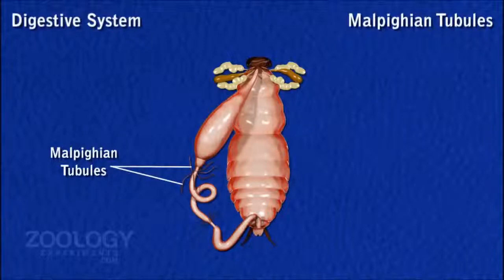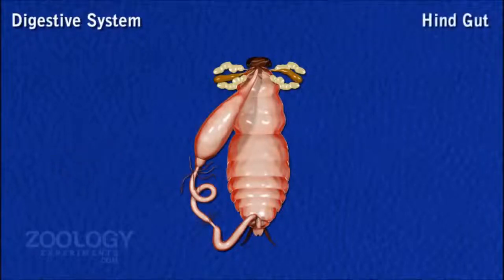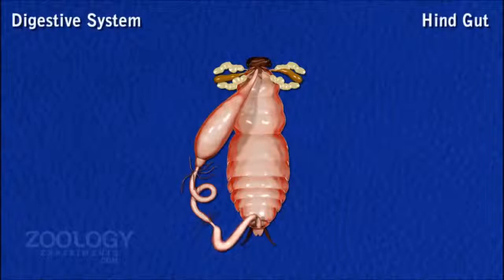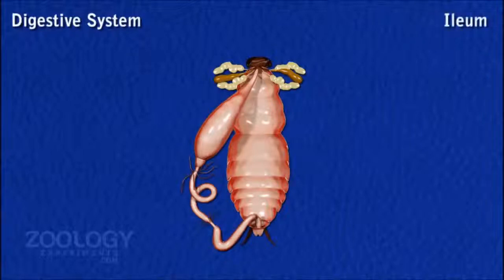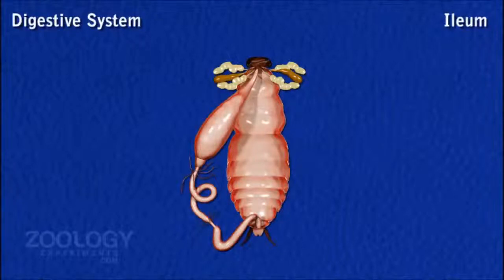Hindgut: The posterior one-third part of the alimentary canal forms the hindgut. It is divided into three regions: ileum, colon and rectum. The ileum is a narrow and short tube, and its posterior end is characterized by the possession of six tiny triangular lobes internally, bearing spicules and axons acting as a sort of sphincter.